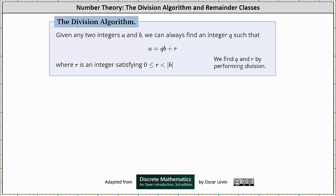Welcome to a lesson on the division algorithm and remainder classes. Given any two integers a and b, we can always find an integer q such that a equals q times b plus r, where r is an integer satisfying the condition that r is greater than or equal to zero and less than or equal to the absolute value of b. Notice this indicates that r will always be non-negative. Given a and b, we can always determine q and r by performing division, where a is the dividend, b is the divisor, q is the quotient, and r is the remainder.